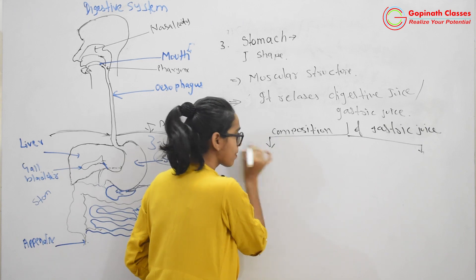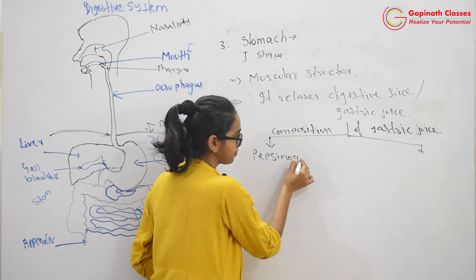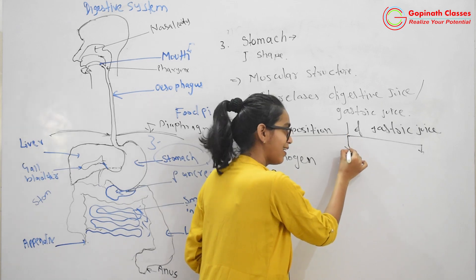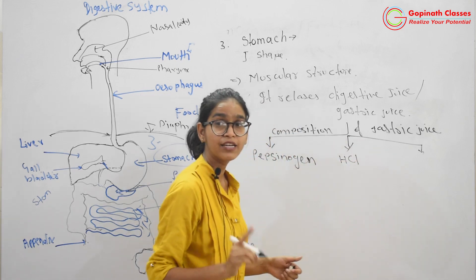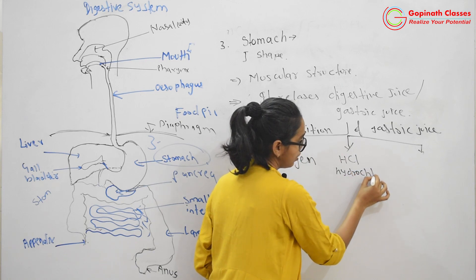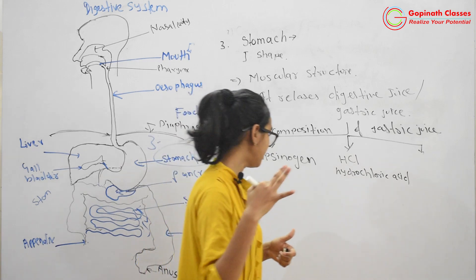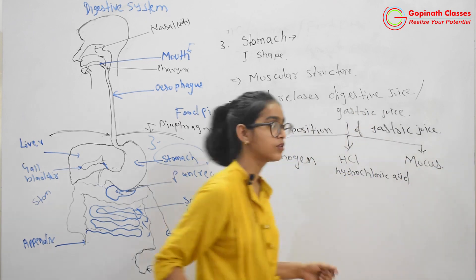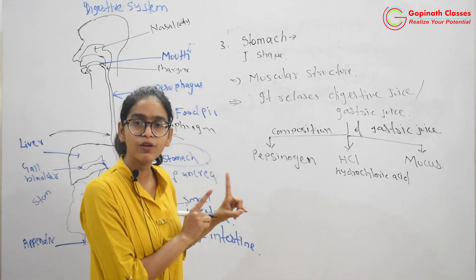Number one: Pepsinogen. Number two: HCL, that is hydrochloric acid. Number third: Mucus. So these are the three contents of gastric juice. Now, we will study each one of them one by one.